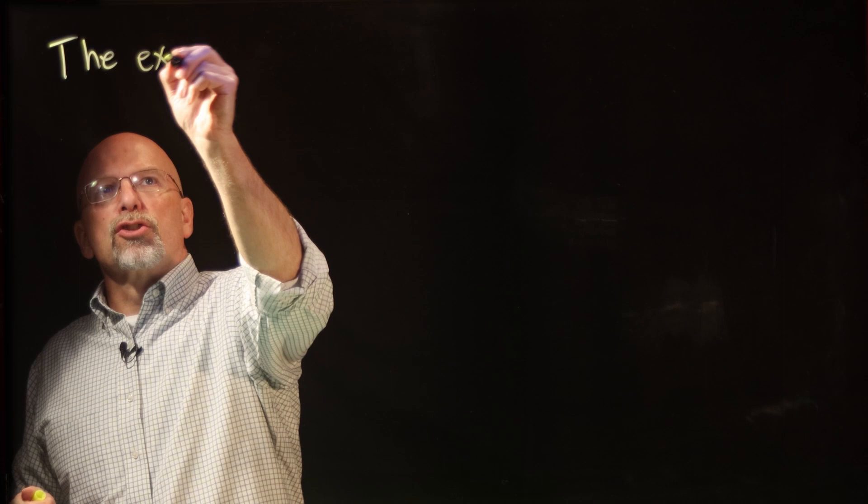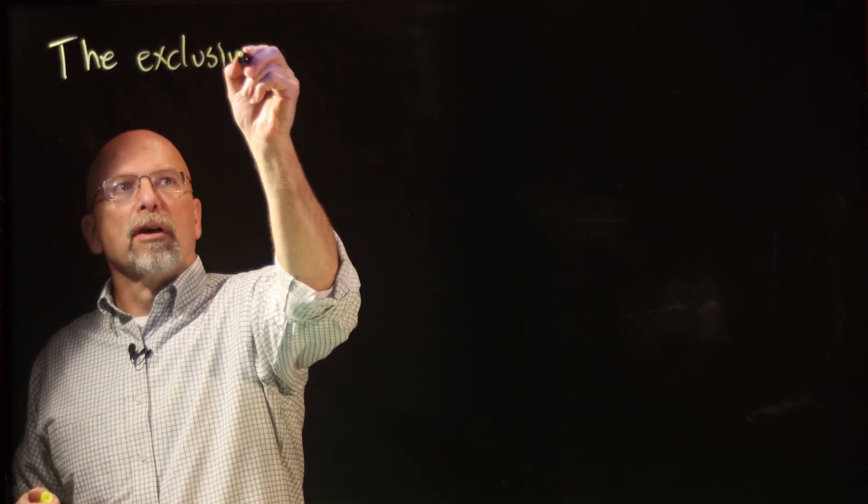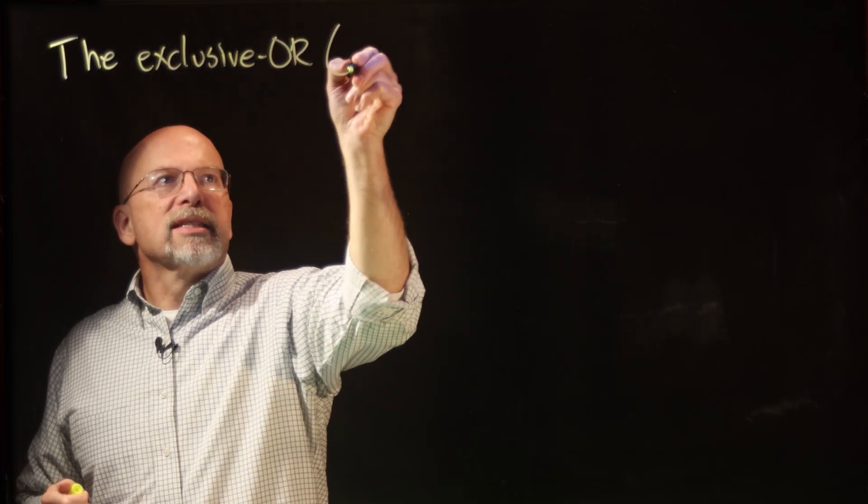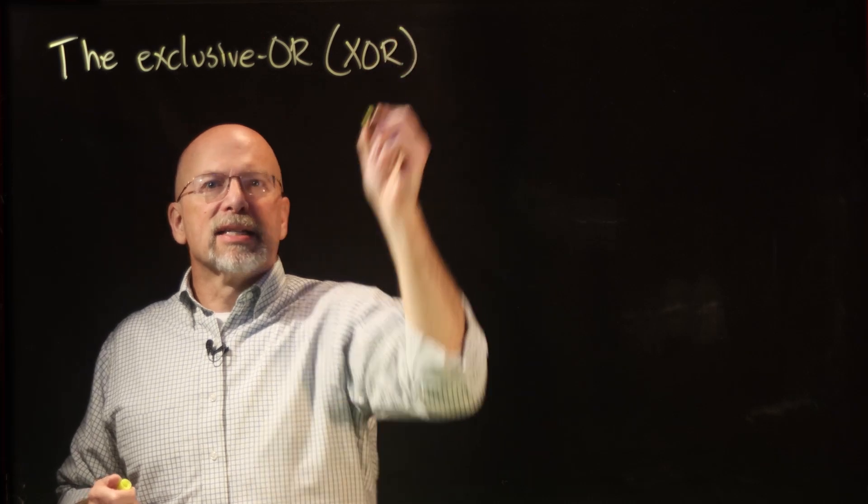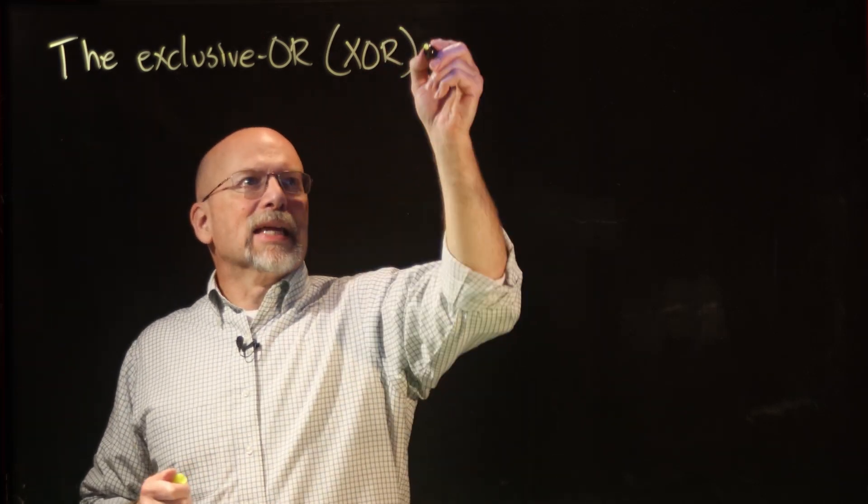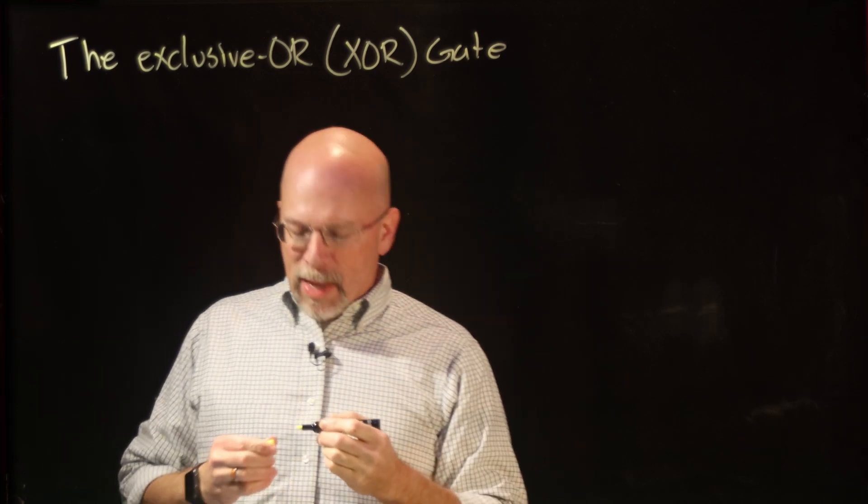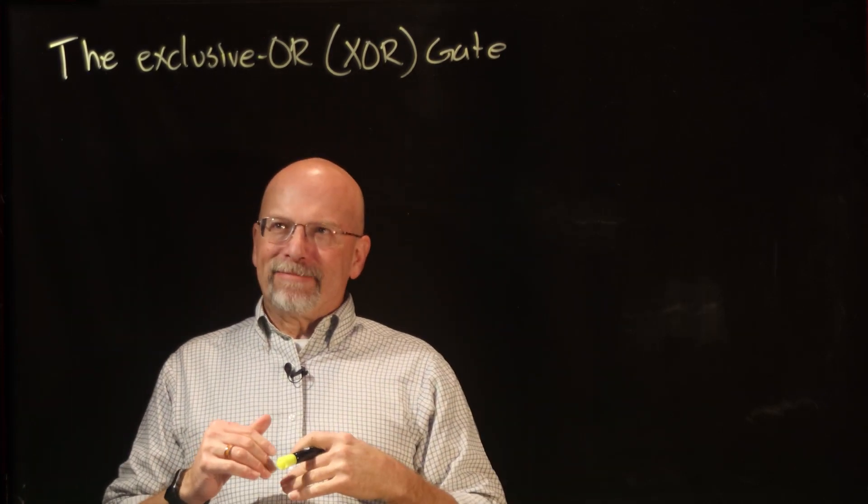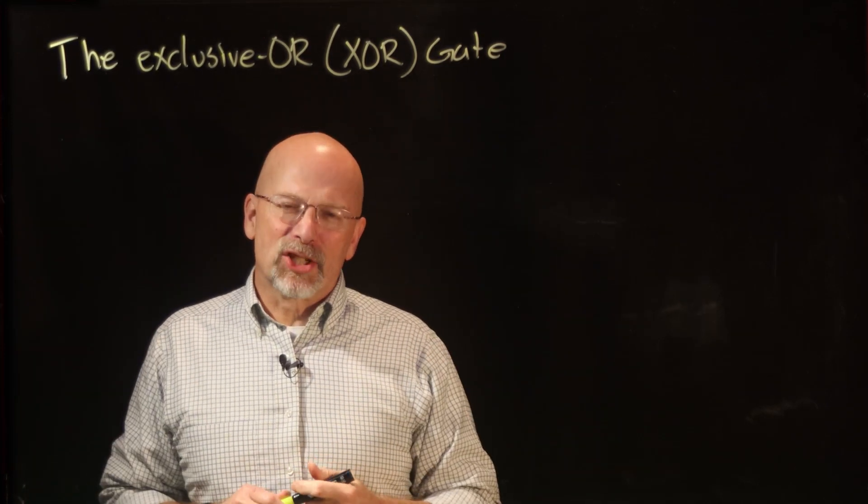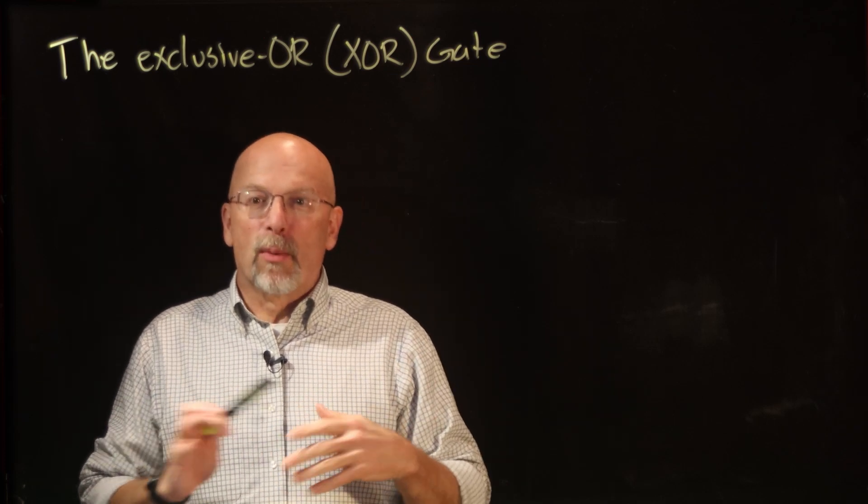The fourth gate in our lesson series on logic gates, and the third gate that has multiple inputs, is something called an exclusive-OR gate. Sometimes you see it written as an XOR gate. Now this one has some unique definitions to it.